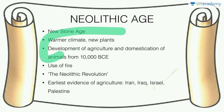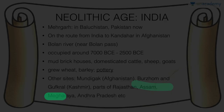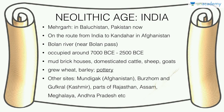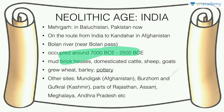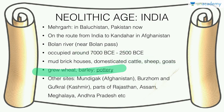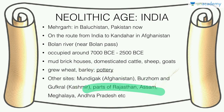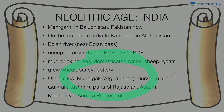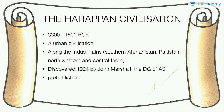The earliest evidence of agriculture is found in Iraq, Iran, Israel, etc. In India, the most important site is Mehrgarh in Baluchistan, Pakistan, located on the route from India to Kandahar in Afghanistan on the Bolan River near the Bolan Pass. It was occupied from around 7,000 to 2,500 BCE and had houses, domesticated cattle, sheep, goat, wheat, barley, and pottery. Other Neolithic sites include Burzahom and Gufkral in Kashmir, parts of Rajasthan, Assam, Meghalaya, and Andhra Pradesh — so various parts of India had Neolithic agriculture about 9,000 years back.